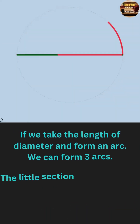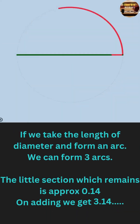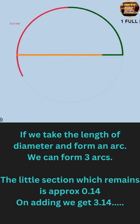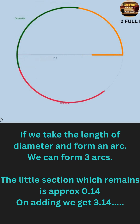In simple words, if we take the length of the diameter and form an arc along the circumference of a circle, we get 3 arcs on it, and the little section which remains is approximately 0.14, and on adding we get 3.14.